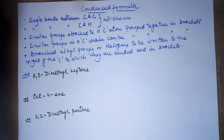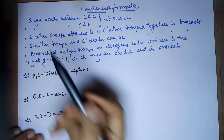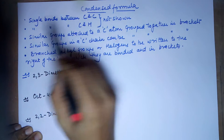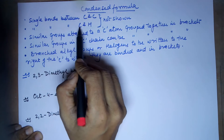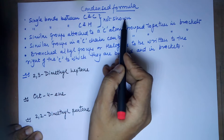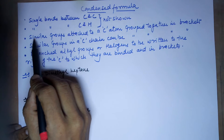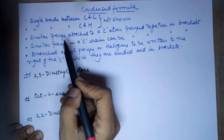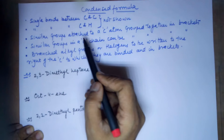Good evening students. Today in our class we'll be doing condensed formula. The key points about the condensed formula are: the single bonds between carbon and carbon, as well as the single bonds between carbon and hydrogen, are not to be shown. If there are similar groups — could be methyl, could be chloro, two chloros, or two methyl groups attached to a particular carbon — you can group them together and put them in brackets.